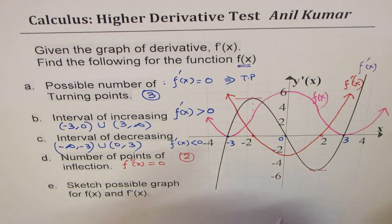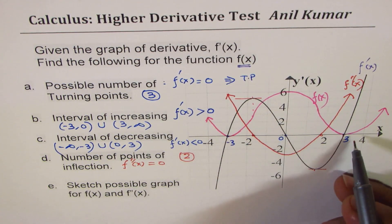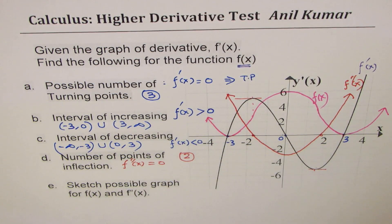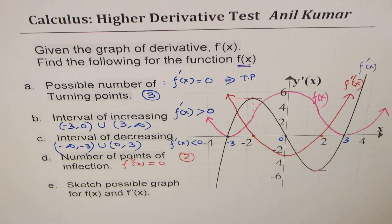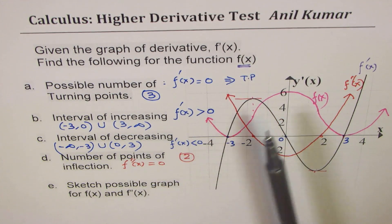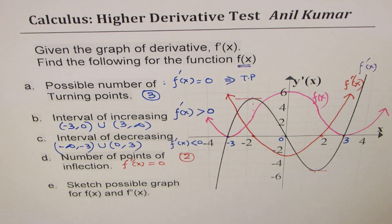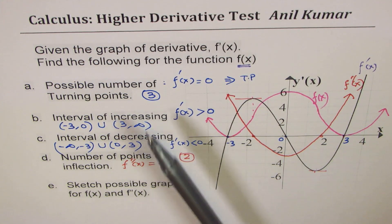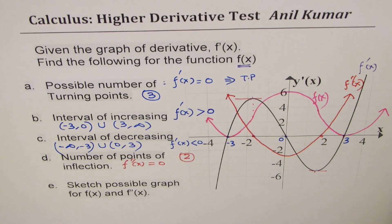So it's a quartic function with three turning points and two points of inflection as discussed. We're not going with any particular values or writing an explicit function, but approximately that is how a function could look with the given first derivative. I hope this is easy to understand how we got all these values and how we sketched the function and its second derivative from the given derivative. Feel free to post your comments, and if you like and subscribe that will be great. Thank you and all the best.